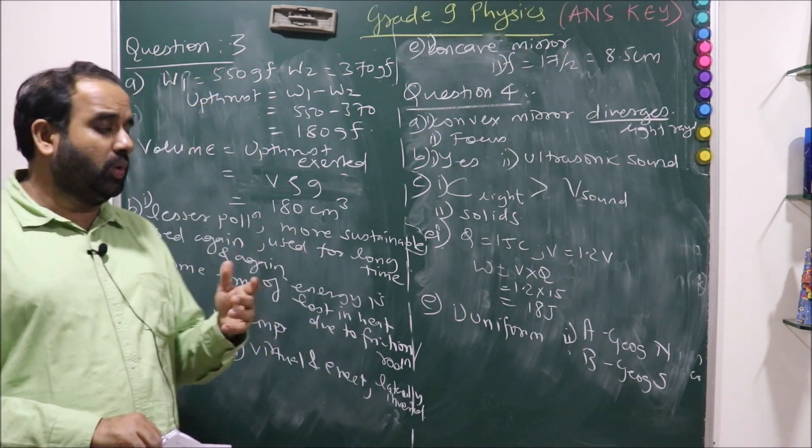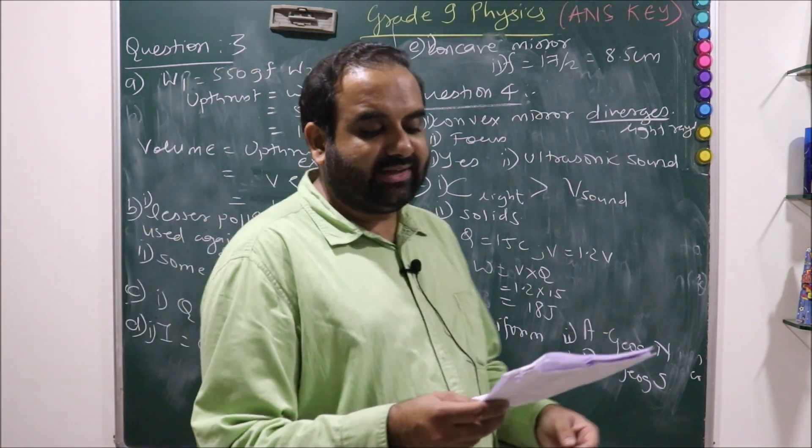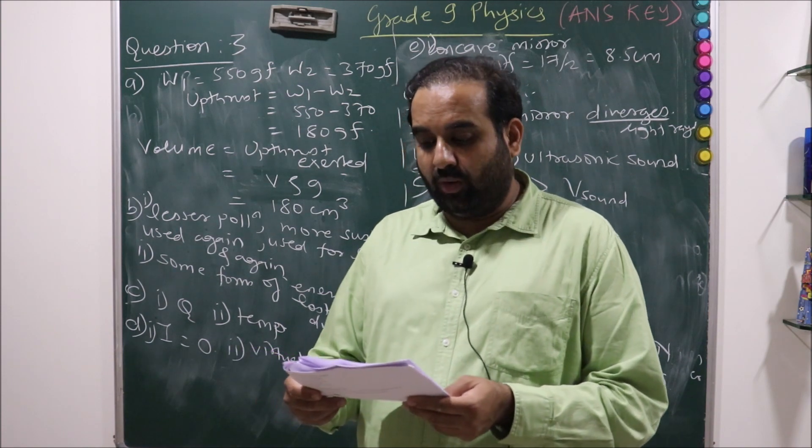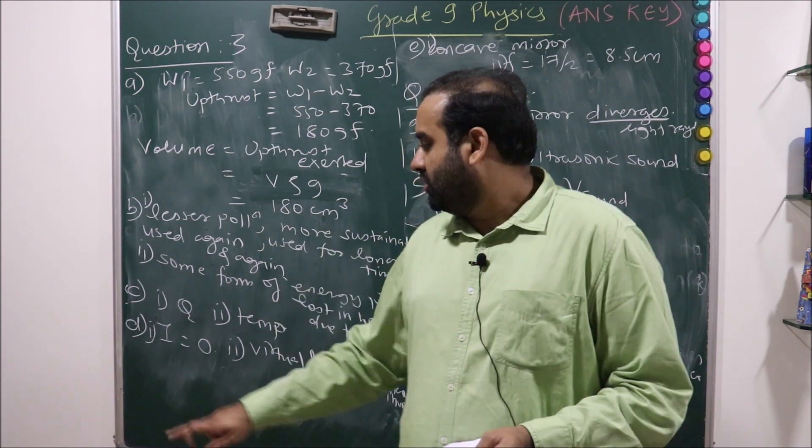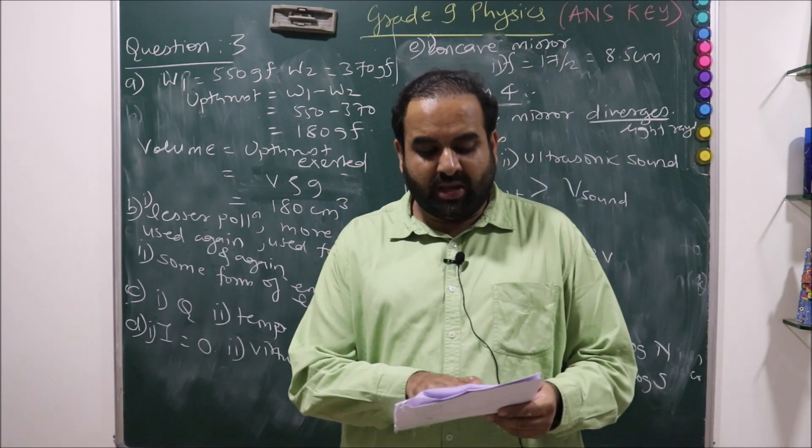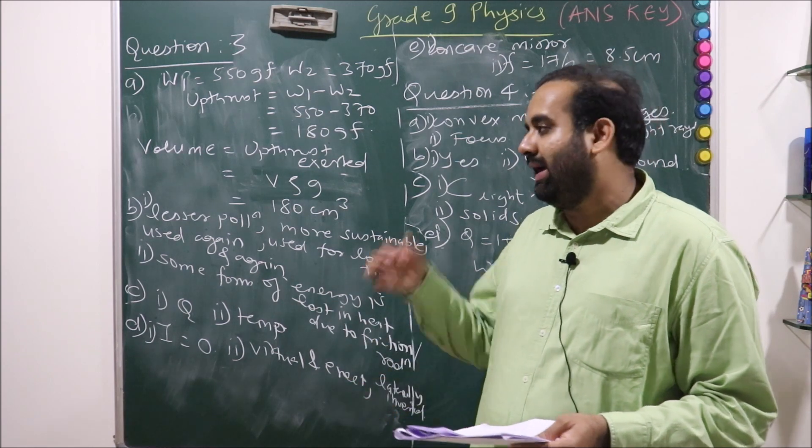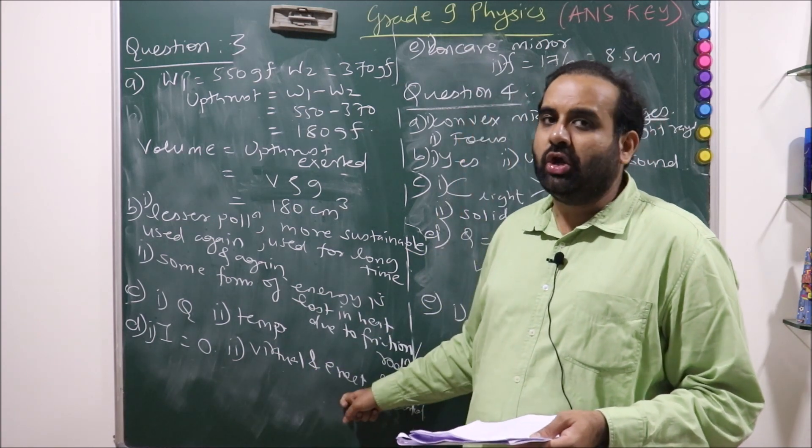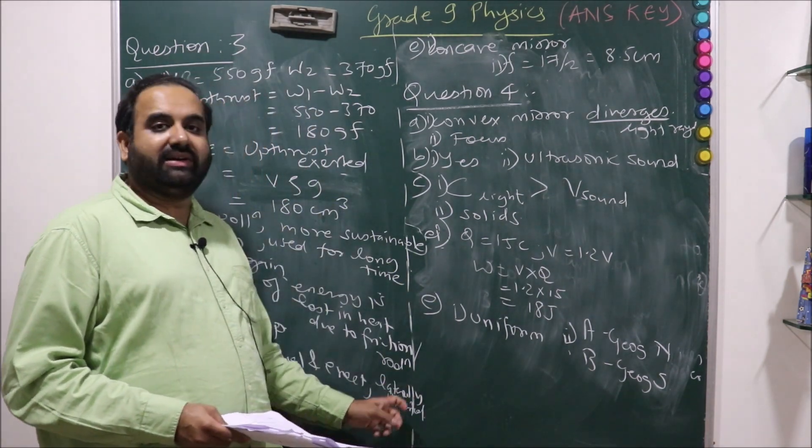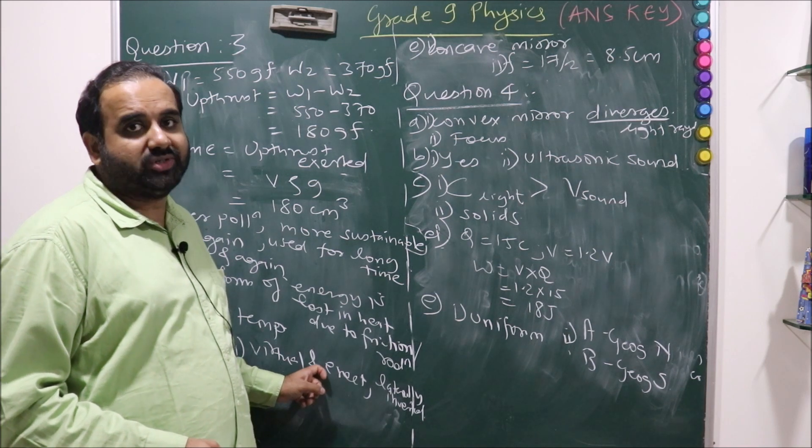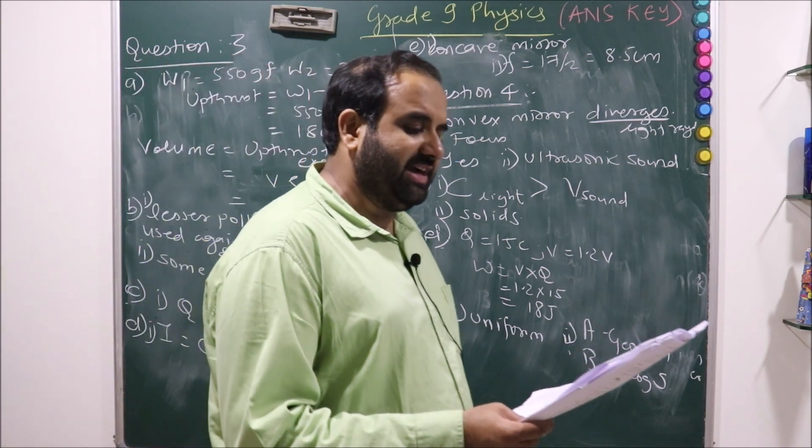A plane mirror is used to obtain the image of an object. Compare the size of the image formed to that of the size of the object. We all know in a plane mirror, the size of the image is equal to the size of the object, so I equals O. It is the same size. State the nature of the image formed in the plane mirror. It will be virtual and erect, laterally inverted. The expected answer is virtual and erect. If you have written this much, you will get one mark. Laterally inverted is extremely important, because that is the correct answer.